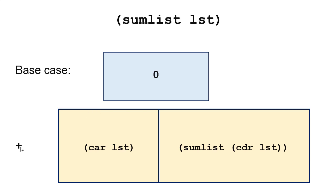However, instead of a cons at the end, we're going to use the addition operator because we want to return one value, not a list. So our base case, when we have the empty list, we're going to return zero, because the sum of the elements in the empty list is zero.